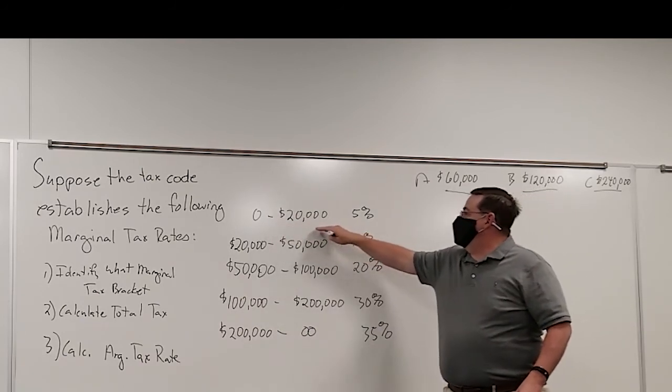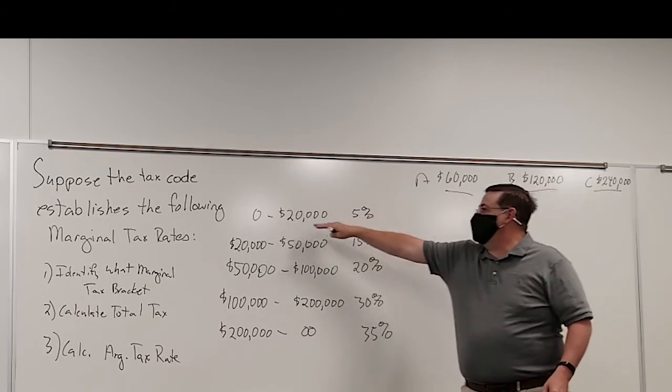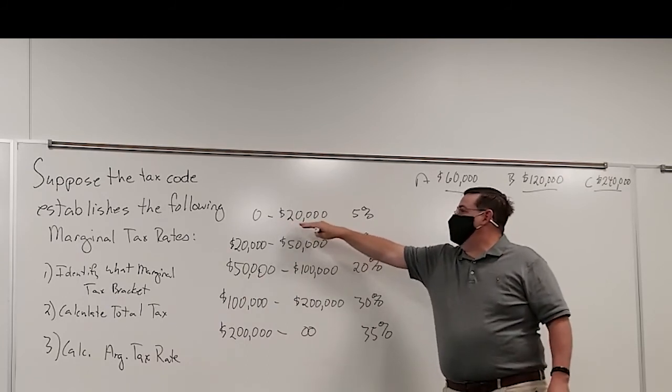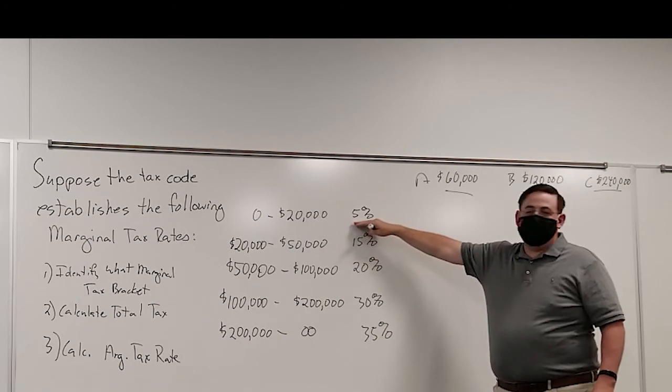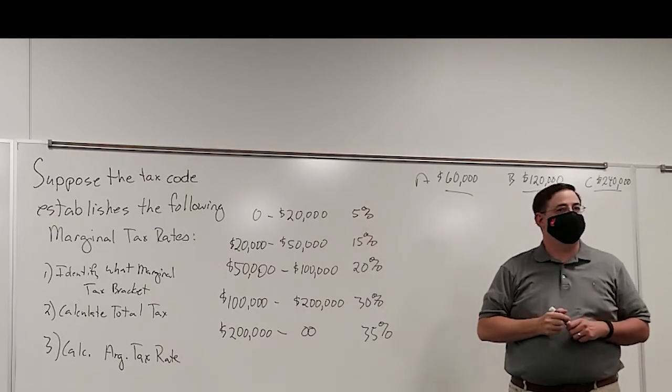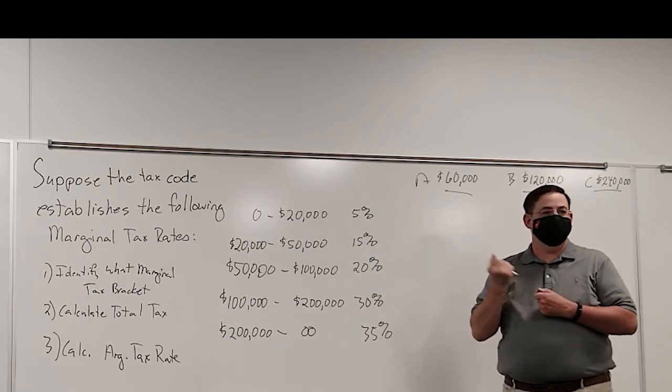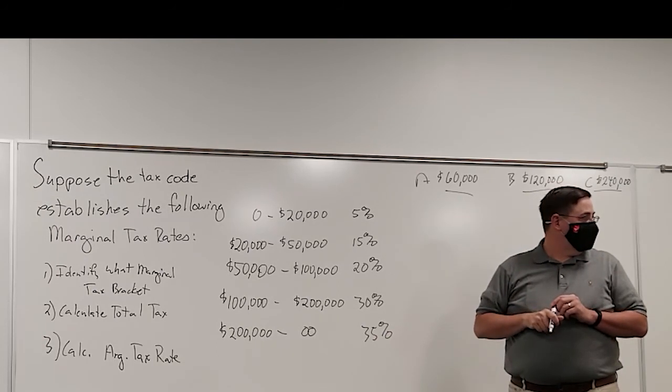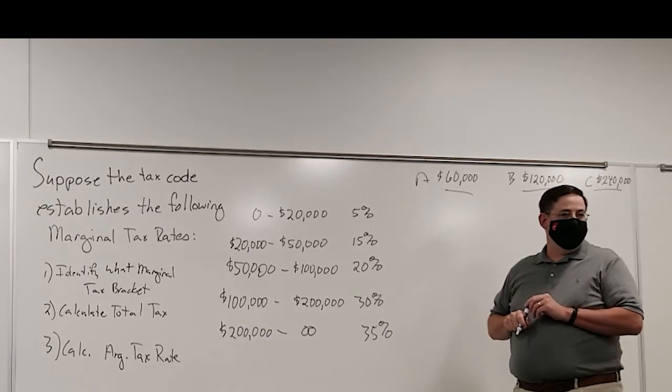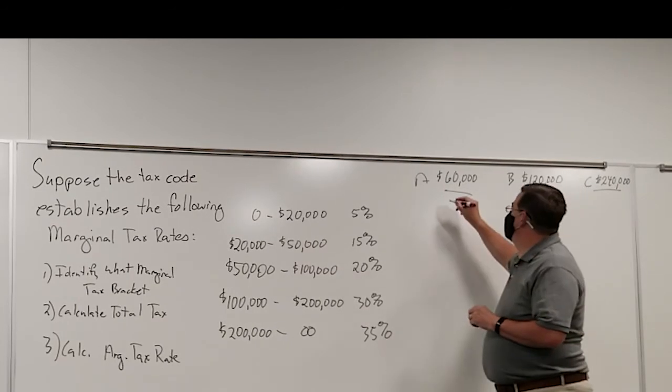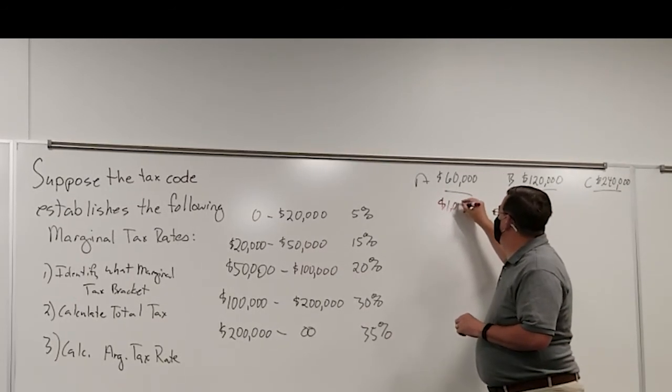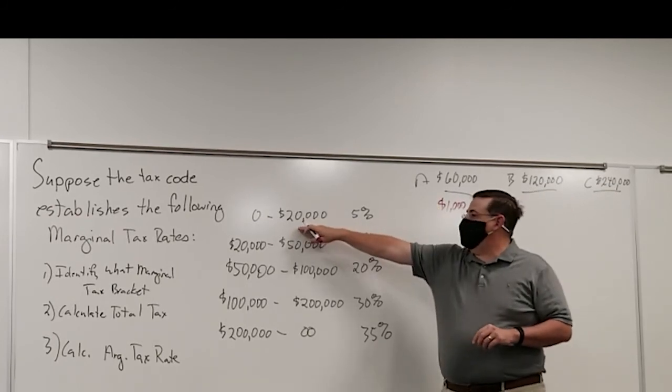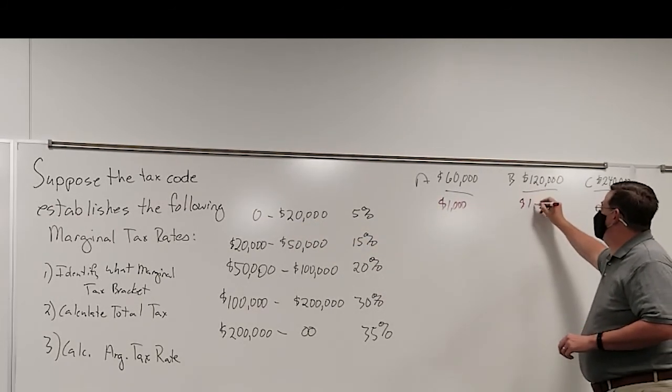So for all of the families, they earned more than $20,000. So for this amount of income, $20,000 multiplied by 5% is $1,000. So each family is going to pay $1,000 for the amount of income that they earned up to $20,000. So all of them are going to pay $1,000.